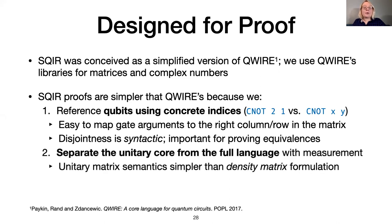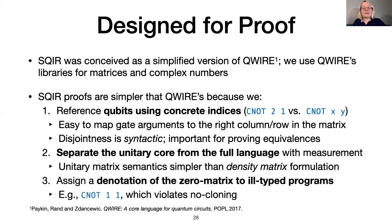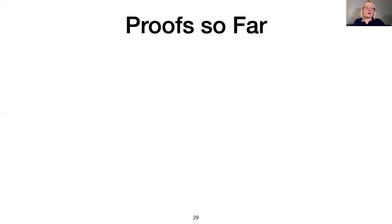Second, we keep the unitary portion of SQUIRE separate from the full language, allowing us to largely avoid the more complicated density matrix semantics, which is necessary to reason about programs that include measurement. Finally, rather than leaving the semantics of ill-typed programs undefined, we define their semantics to be the zero matrix. This allows us to avoid cluttering theorems with preconditions about well-typedness. These differences between SQUIRE and QWIRE make it easy to prove properties about SQUIRE program transformations. And it turns out that they make source program proofs easier, too.